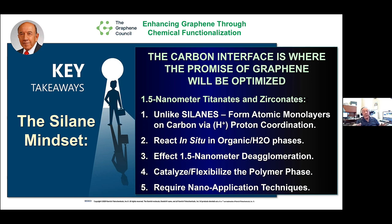All you've got to do is make sure that you've got your sequence of addition right, your solubility parameters right, and you're making contact in atomic monolayers. So you can do the reaction in situ in the organic or water phase, and you can affect deagglomeration with 1.5-nanometer spacing with the organofunctional titanate. Not only that, the titanate or zirconate catalyzes and flexibilizes the polymer phase surrounding the graphene, so you're having an effect on the morphology of the polymer.